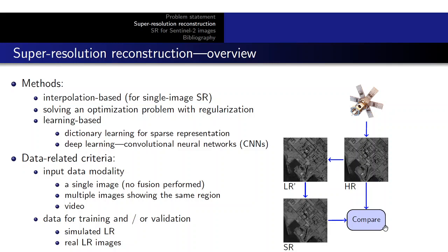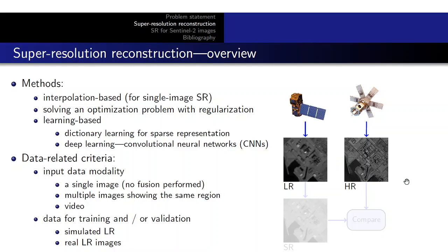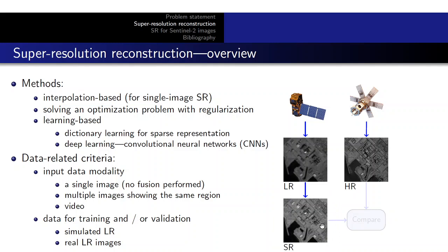A much better solution is when we have two independent sources of images — one delivering high-resolution images and the second delivering low-resolution data. We take this low-resolution data, process it to obtain a higher-resolution result — our super-resolved image — which is then compared with the high-resolution image during training and for evaluating the super-resolution outcome.